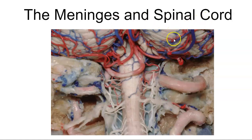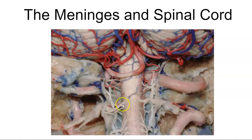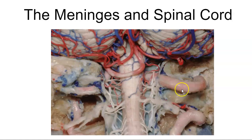Here we see the cerebellum back here, and then this is the spinal cord. These little nerves that are coming off are little rootlets — they're little nerves that turn into spinal nerves. These are arteries here, there's an artery there, an artery there. But this is the spinal cord.